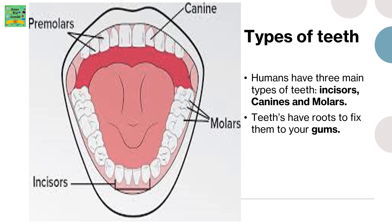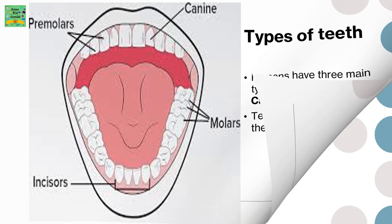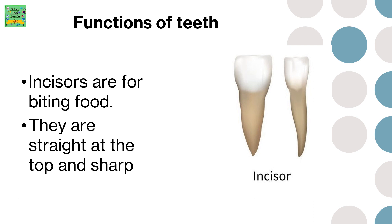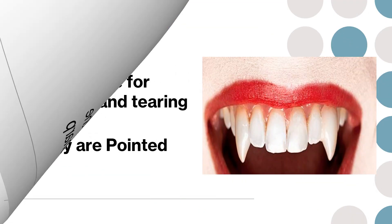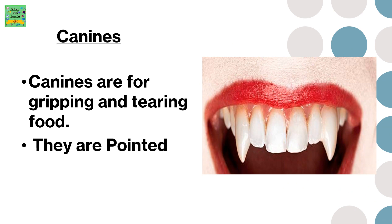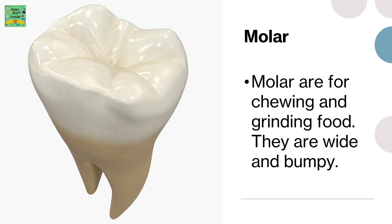Teeth have roots to fix them to your gums. Function of teeth: incisors are for biting food — they are straight at the top and sharp. Canines are for gripping and tearing food — they are pointed. Molars are for chewing and grinding food — they are wide and bumpy.